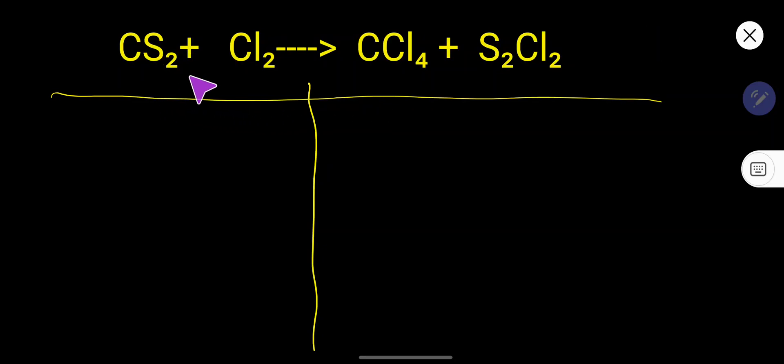How to balance CS₂ plus Cl₂ gives CCl₄ plus S₂Cl₂. To balance, look at the left-hand side. We have the number of carbon is one, the number of sulfur is two, the number of chlorine here is two.